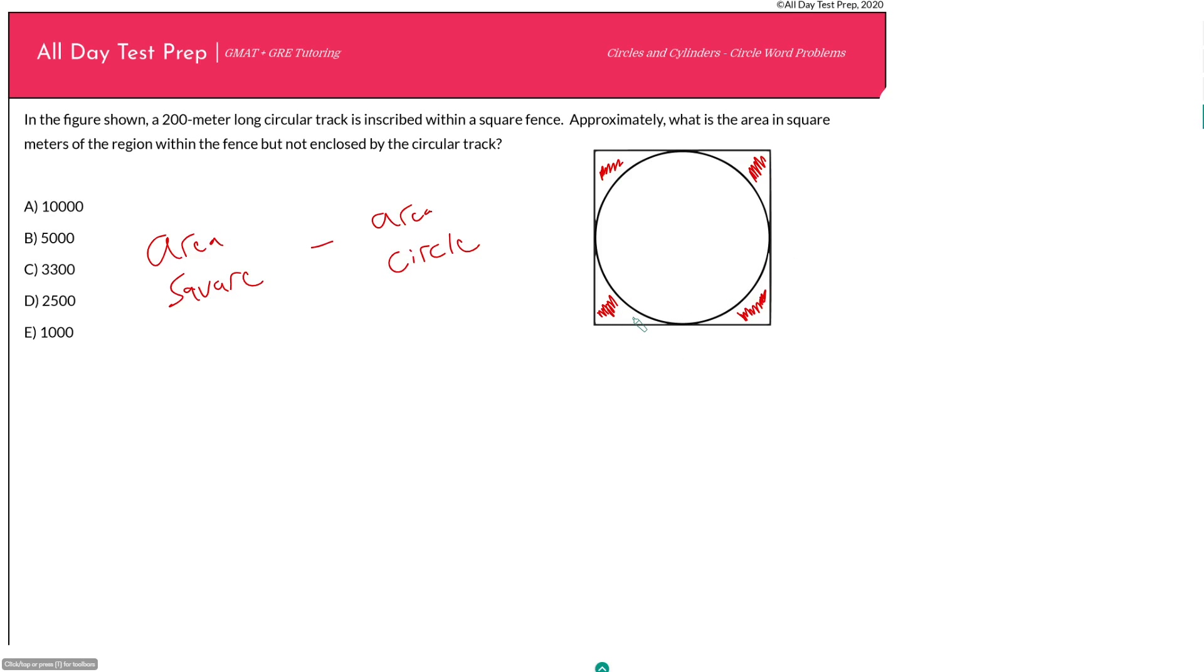So we know this is a square. What does that mean? That means all of our sides have the same length. It also means all our angles here in our corners are going to be 90 degrees, but I don't think that is going to be super helpful here.